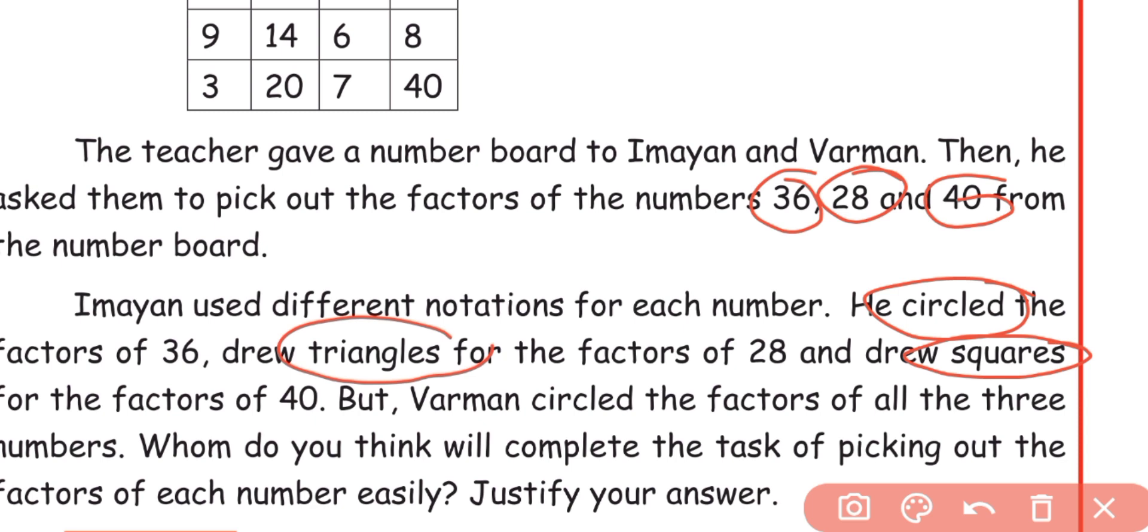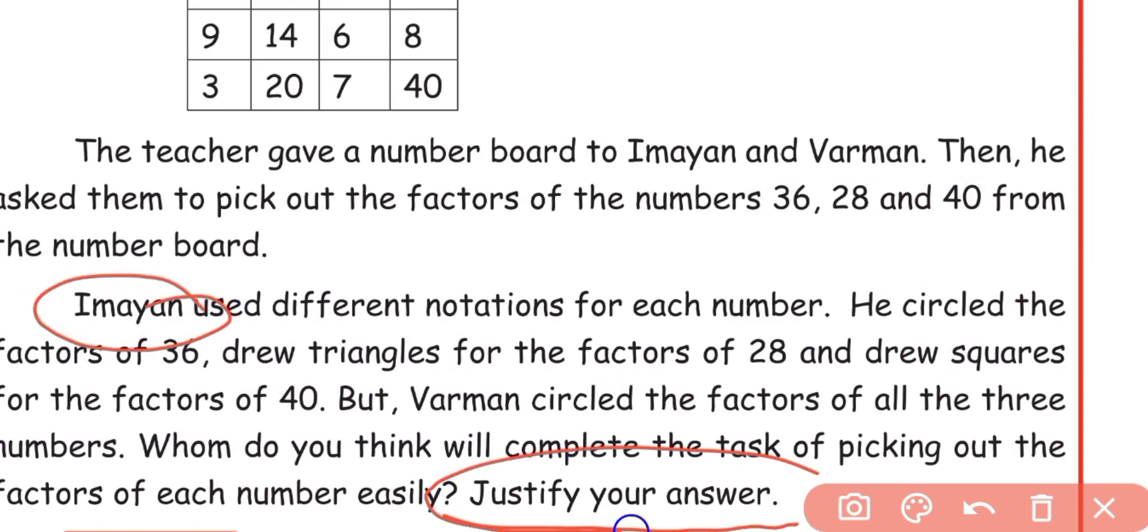The different notations make it easy to find the factors. If you circle all the factors, it can be confusing, but using different notations for each number makes it easier to identify the factors. So, Imayan's method is correct. Imayan is correct.